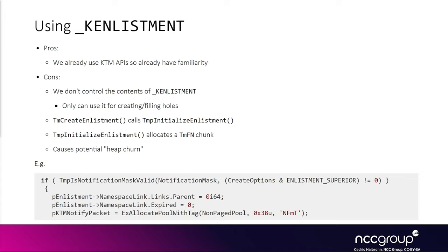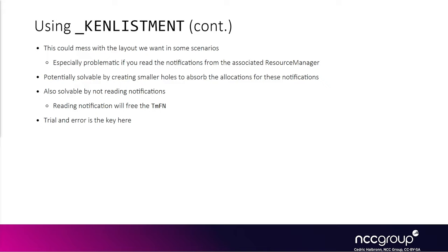When experimenting we realized there's a side-effect allocation: whenever you create a new enlistment, it allocates both a k-enlistment structure and a notification structure marked with the tmfn tag. If you create a bunch of holes and then later create enlistments that also create these notification chunks, when you free an enlistment and read the notifications from userland it will free the notification chunks, potentially causing unwanted coalescing, making the heap layout unpredictable.